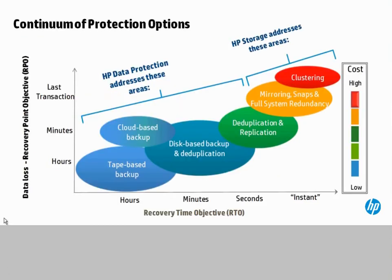In the industry there are a couple of acronyms commonly used in this discussion. On the x-axis I'm depicting the recovery time objectives, or RTOs — how long does it take to do a restore, measured in hours all the way down to instant. On the y-axis I'm depicting the recovery point objectives, or RPOs — after a restore, how current is the data you have to work with? For most organizations and most of their data, it's a very reasonable risk-cost tradeoff to say that recovery times measured in hours, minutes, or even seconds, and data loss after recovery measured in hours or minutes, is quite acceptable.